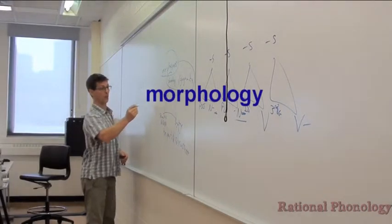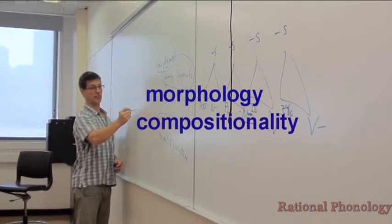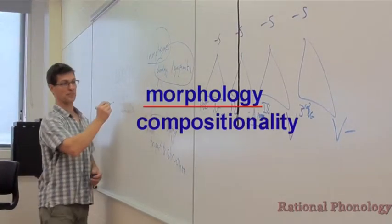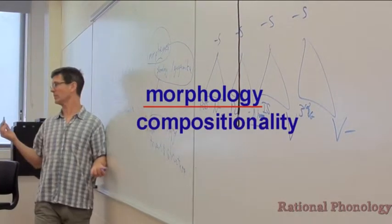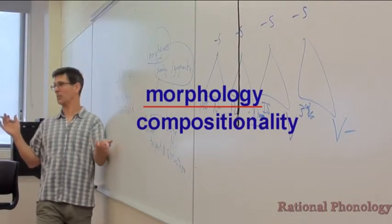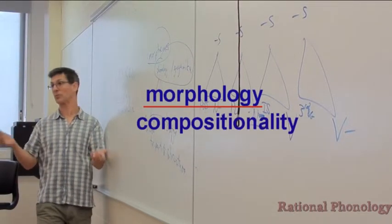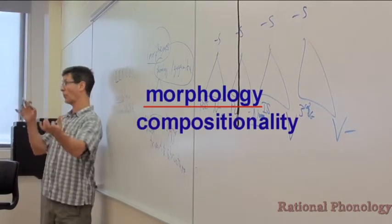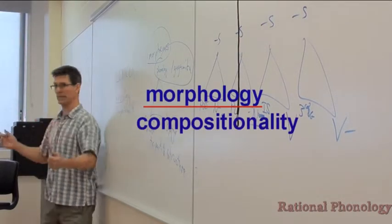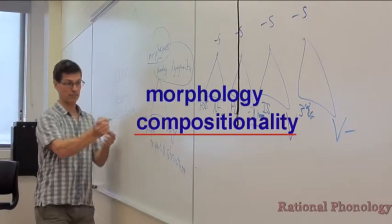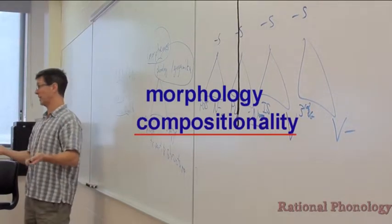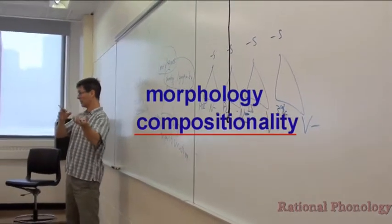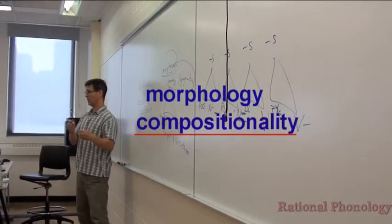We need morphology and compositionality. Morphology - what does morph mean? It means a form. So morphology is the study of word forms, where the morphological part of the grammar is responsible for the form of words by putting its pieces together. Compositionality is a more general word but what it means is that words are composed of pieces and morphology.